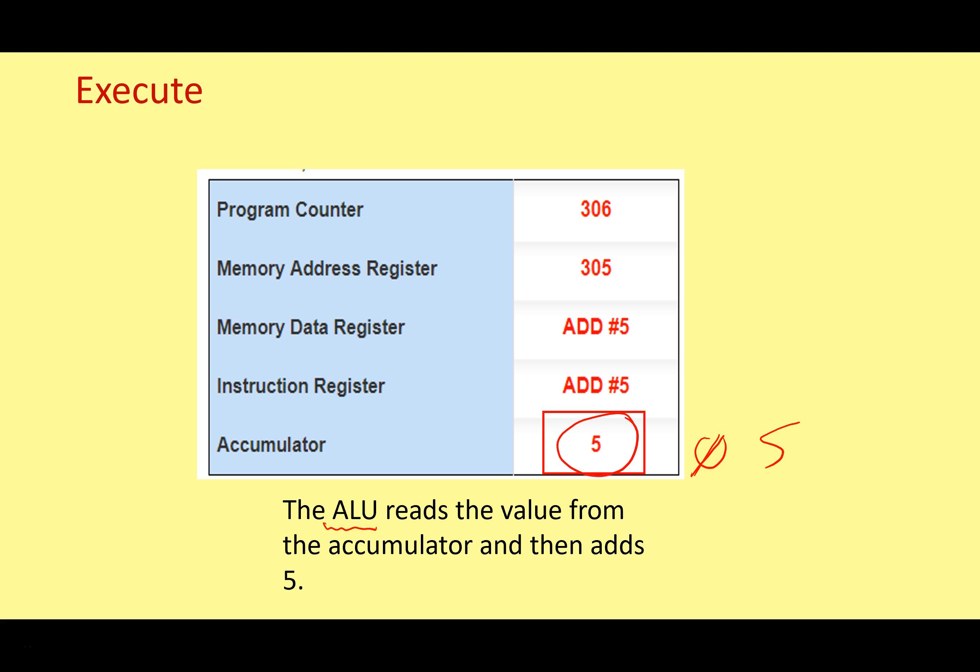All of these steps just perform a really simple instruction: 'add five'. We have to fetch the instruction, take it back to the CPU, decode it, and execute it. Imagine this is happening billions of times a second every time you're running your computer, so that all the software and apps you're using can work correctly. It's a very complex procedure, but it happens very quickly. Hopefully now you've got a better idea of what's happening at each stage of the fetch-decode-execute cycle, and you can describe what's happening to the contents of the registers at different points.